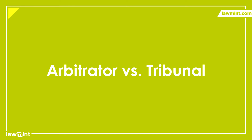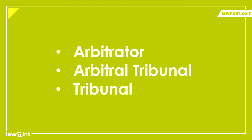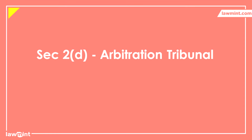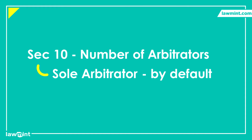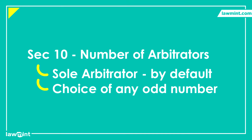Before going forward, let us first understand the difference between an arbitrator and an arbitral tribunal. When you read about arbitration, you will come across the terms arbitrator, arbitral tribunal, or just tribunal, and these are often used interchangeably because in reality all of these terms are the same. Section 2D of the act defines an arbitral tribunal as a sole arbitrator or a panel of arbitrators. The number of arbitrators is covered under Section 10, which essentially says that the default number of arbitrators in a tribunal is 1. However, the parties are free to decide if they want more arbitrators, as long as the number is an odd number.